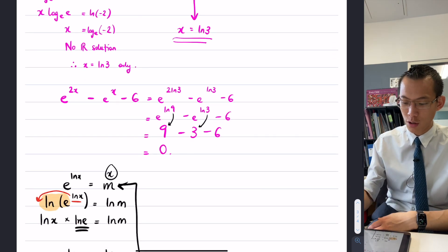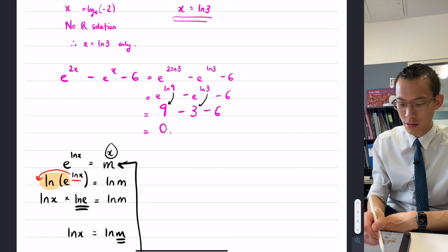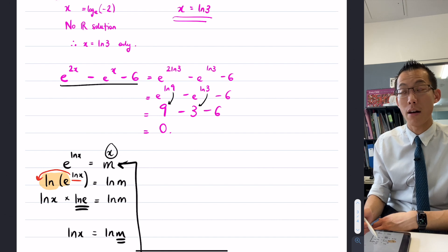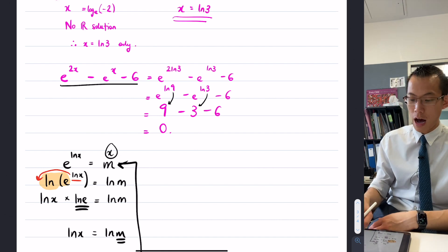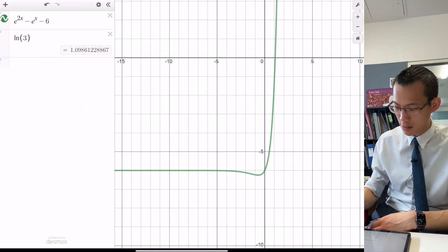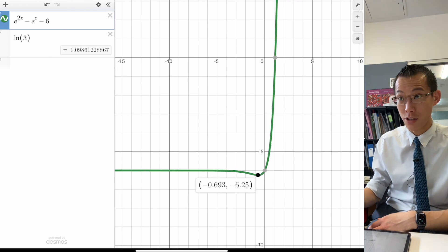Suppose the question was don't just find the root, don't just find the x intercept, I want you to find where that stationary point is. So what we would need to do is we would differentiate this thing.